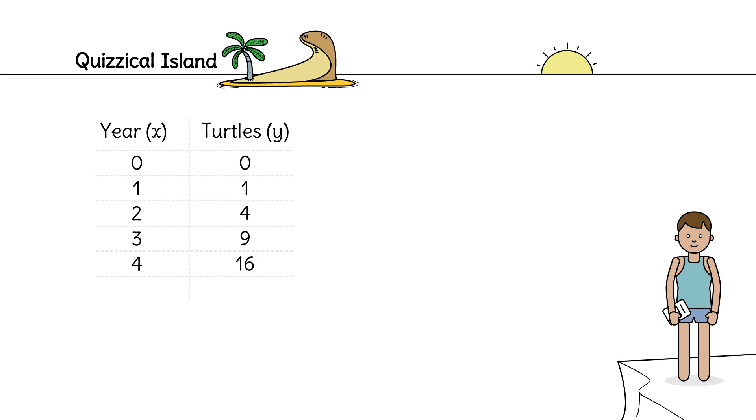Sam collects data for five years. He calls the year x and the number of turtles y. Can you see any patterns? The number of turtles is the square of the year.